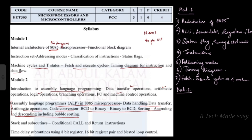What is a subroutine? A subroutine is a group of instructions that will be used repeatedly in different locations of the program.